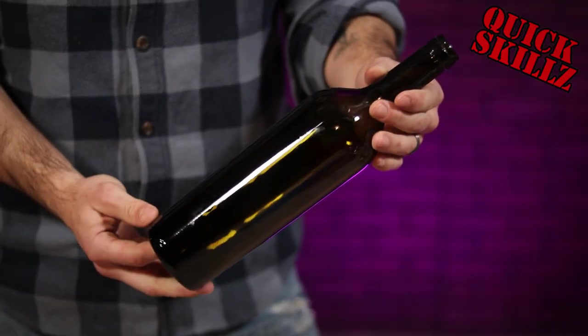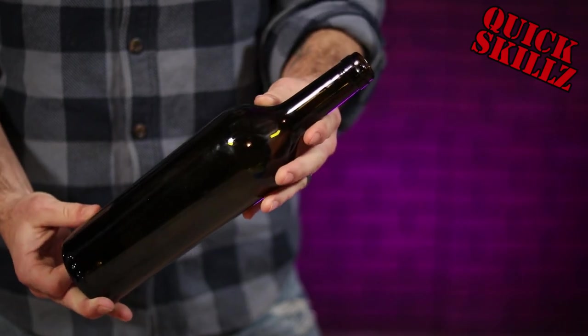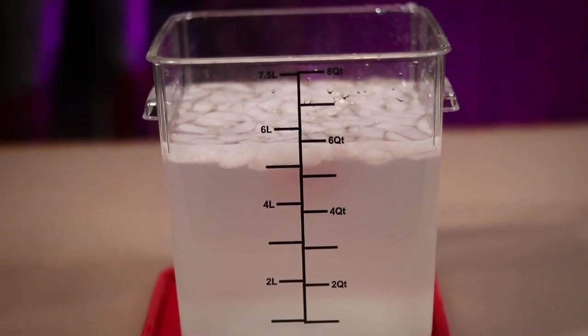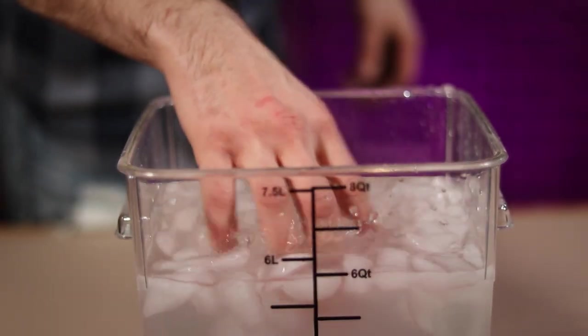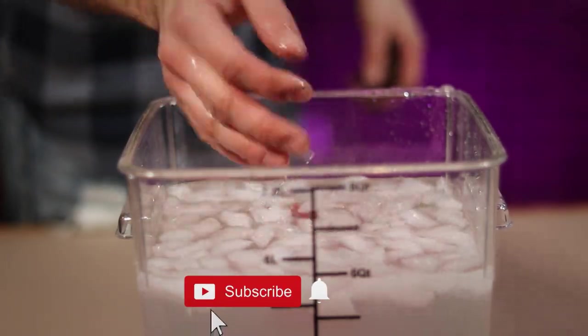To try this technique out, I'm going to try to cut this wine bottle into a drinking glass. For this, you're going to need a container of ice water big enough to fully submerge your bottle into. This will fulfill the ice portion of our equation.